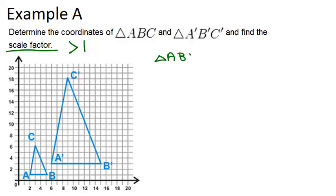In triangle ABC, we have A is at the point (2,1), B is at the point (5,1), and C is at the point (3,6).